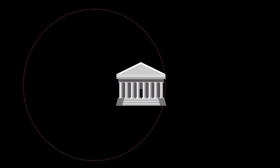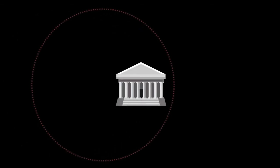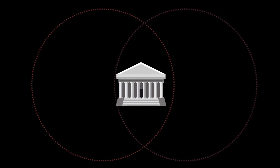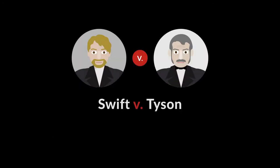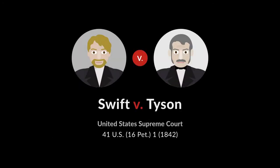Ever since the first federal courts were created, an issue that continues to arise in federal litigation is what jurisdiction's law applies to a given case. Congress attempted to answer that question in the 1789 Rules of Decision Act, and the Supreme Court considered the scope of that act in the 1842 case of Swift v. Tyson.